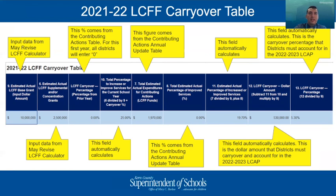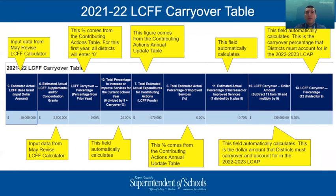First, on the left, is the estimated actual LCFF base grant amount field. Districts will need to revise LCFF calculators based on the May revise, and this is where the revised base grant amount goes. Next is the LCFF supplemental and concentration grants field, which will automatically populate from a previous table — though I recommend double-checking it for accuracy. The third field is the LCFF carryover percentage for prior year. For this year, all districts will enter zero. 2021-2022 is intended as a baseline since it's the first year that legislative regulations on supplemental and concentration grant carryover have been implemented. Districts that have been tracking carryover should spend those dollars on unduplicated students as intended, but still enter zero in this field.